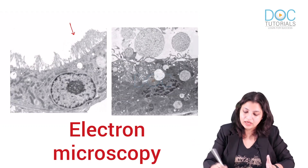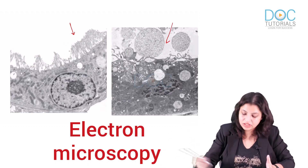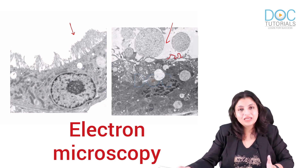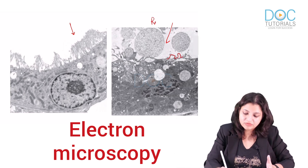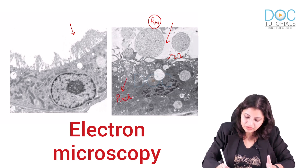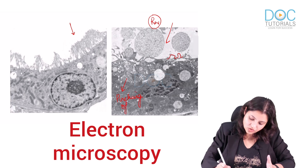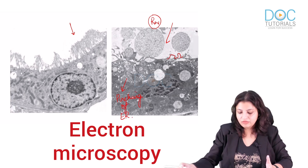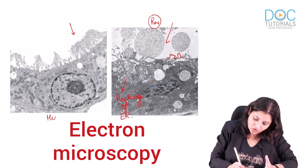This is the normal cell with microvilli, and here the microvilli are lost and there is bleb formation. This is a typical electron microscopy of reversible cell injury. You can also see what is called pinching of endoplasmic reticulum.